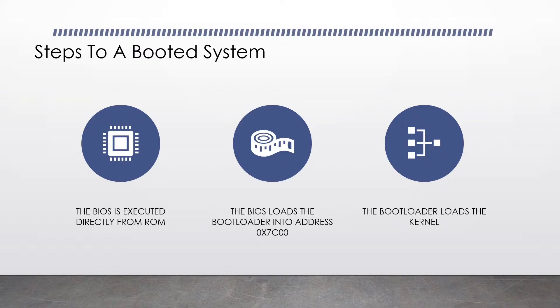The BIOS loads our operating system bootloader into address 0x7C00. This is a hexadecimal number — if you convert that to decimal, then that's the decimal value. The BIOS will then execute our bootloader, which will then load the kernel.